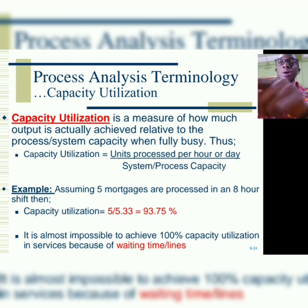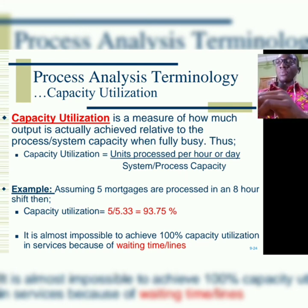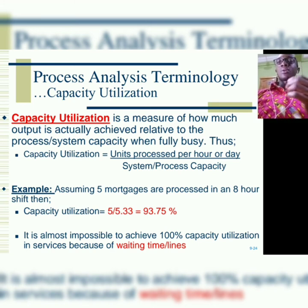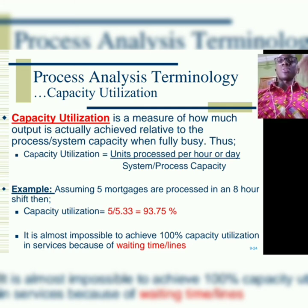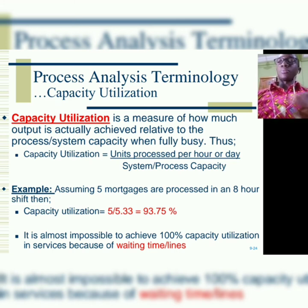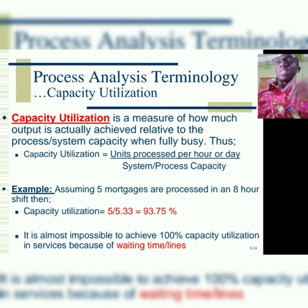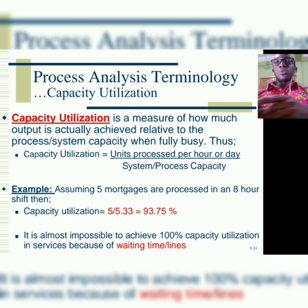In our slide we had 93.75%. If you want to know why, add one more decimal to get 5.333. If you use 5.333 you get a minor rounding difference. But if you use two decimal places as 5.33, you get 93.80%. It's not an issue — that is the capacity utilization in our case.